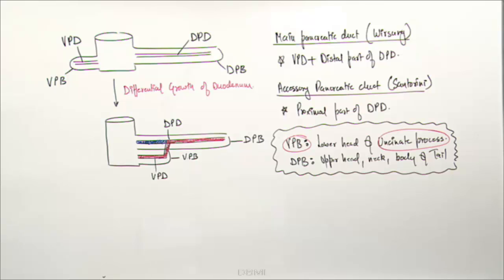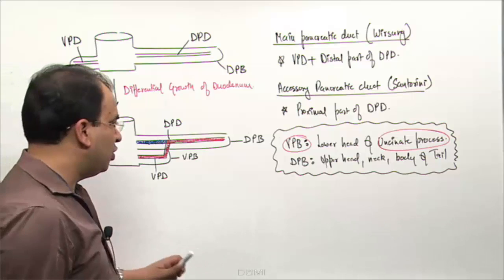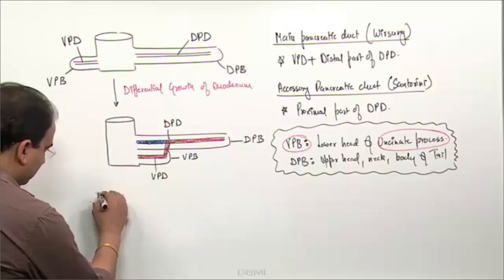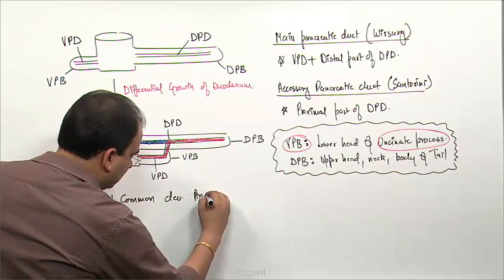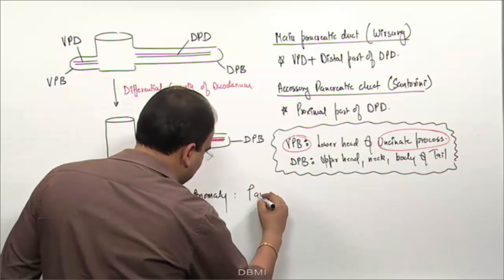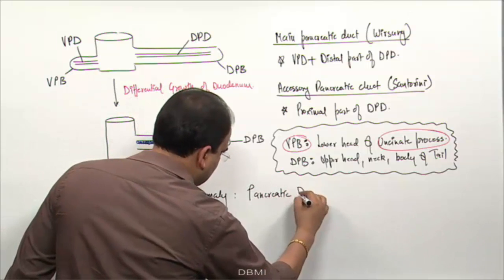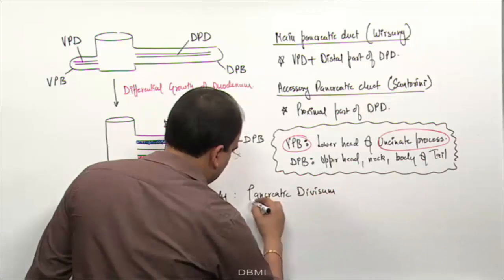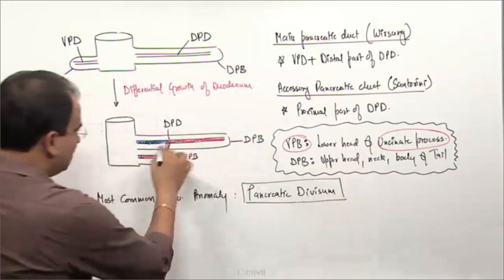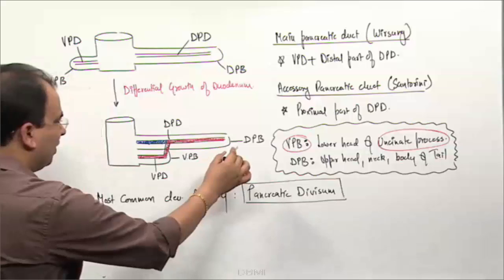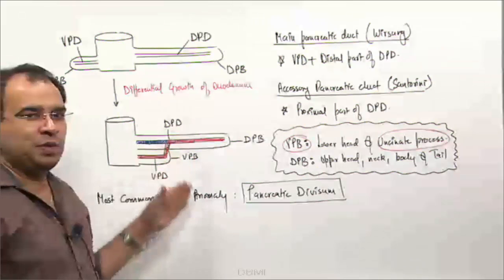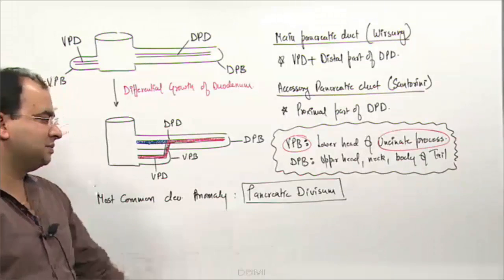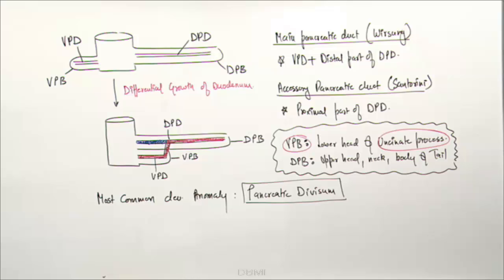The most common developmental anomaly of the pancreas is pancreatic divisum — not annular pancreas. Pancreatic divisum occurs when the two duct systems do not anastomose with each other, resulting in a separate opening of the dorsal and ventral pancreatic ducts with no anastomosis between the two. Annular pancreas is the second most common developmental anomaly.